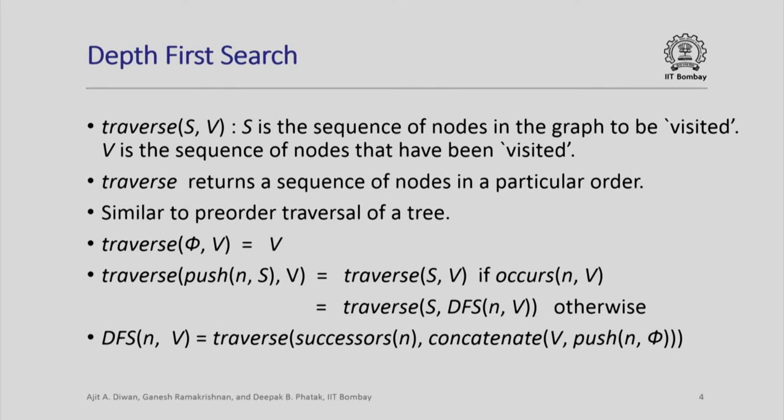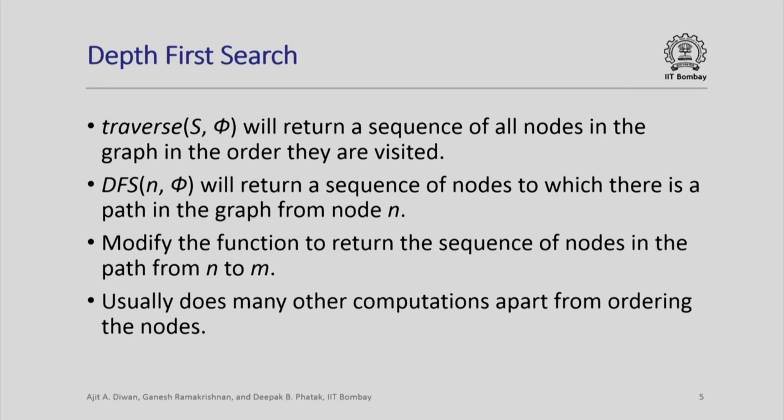Every time a new unvisited node is found, we start a depth-first search from it. DFS adds that node to the set of visited nodes and calls DFS for the successors of that node. When we call traverse(s, ∅) with the set of all nodes in the graph and an empty initial visited set, it returns all nodes in the order they are visited. On the other hand, DFS(n, ∅) returns a sequence of nodes reachable from node n by a path in the graph. By induction on the definitions, only nodes reachable from n will appear in DFS(n, ∅).